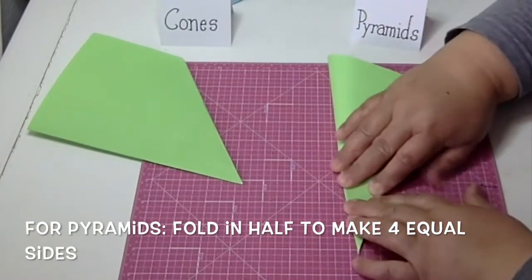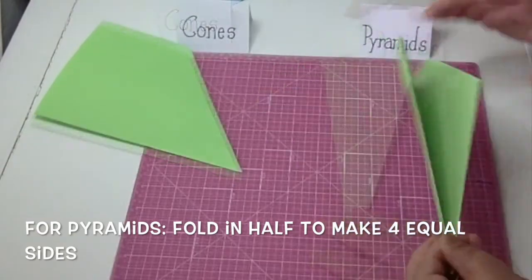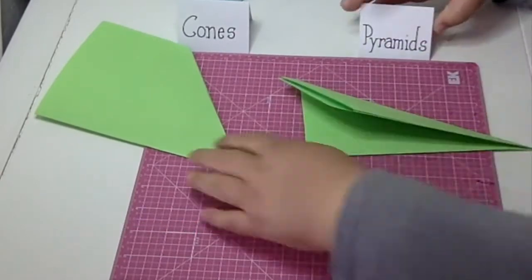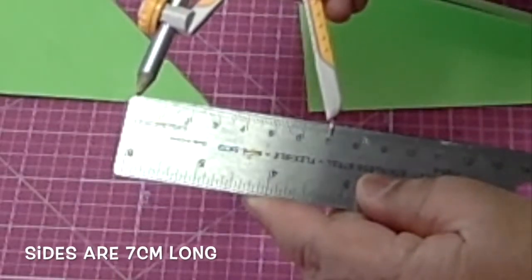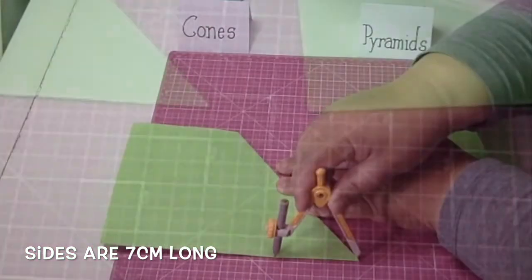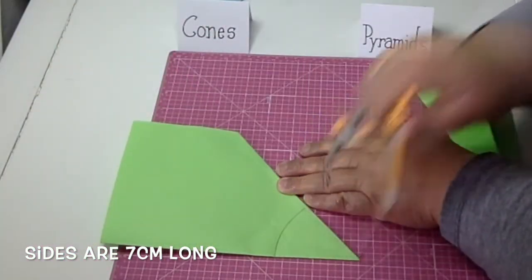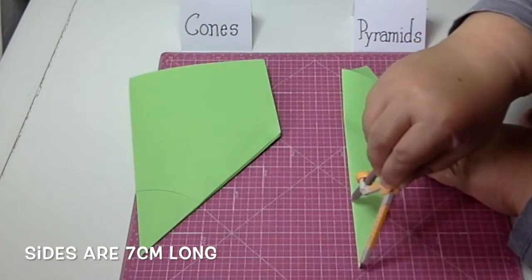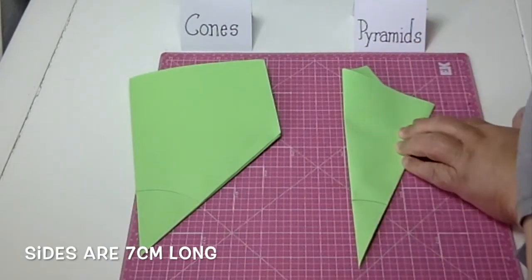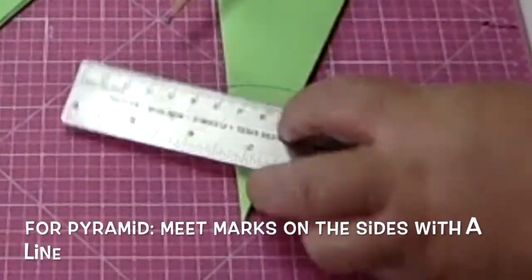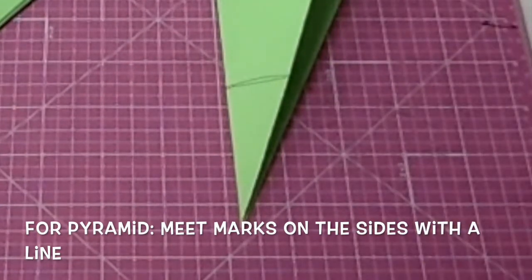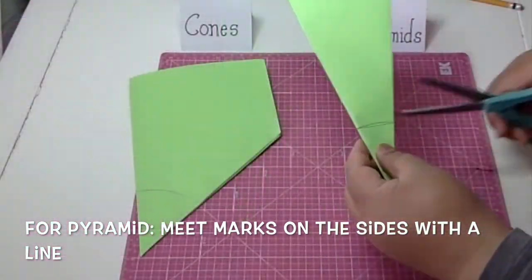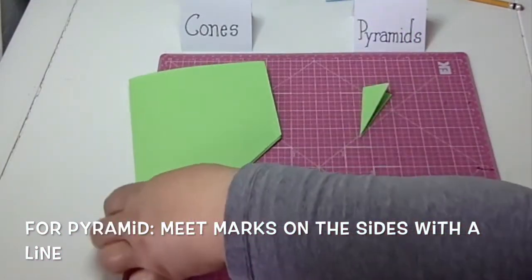So now I have a four-sided pyramid. Then I'm just going to take my compass again, set it at seven centimeters long, make my curve line for the base of the cone, curve line for the pyramid. And to make it a square base, I'm going to meet the edges of that curve together with a line, and then use that to cut my shape.